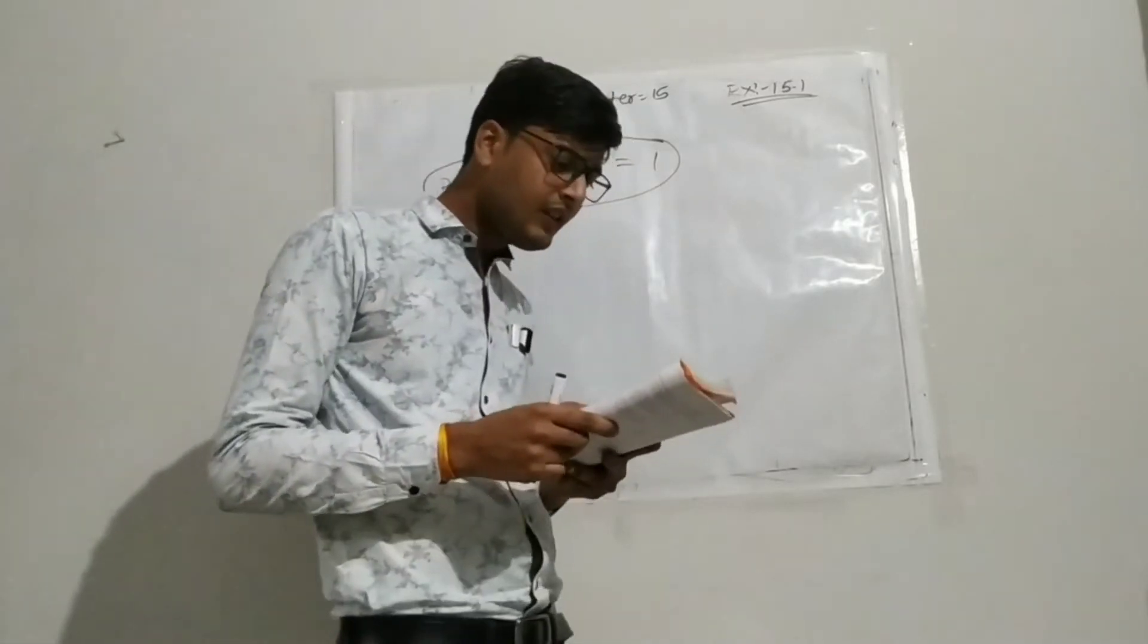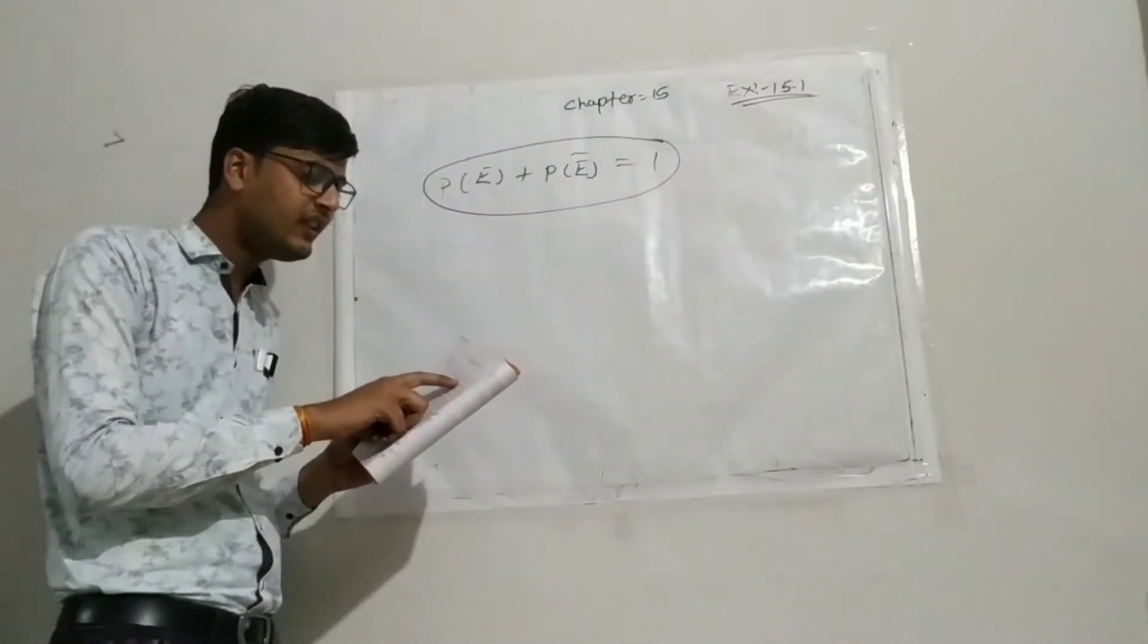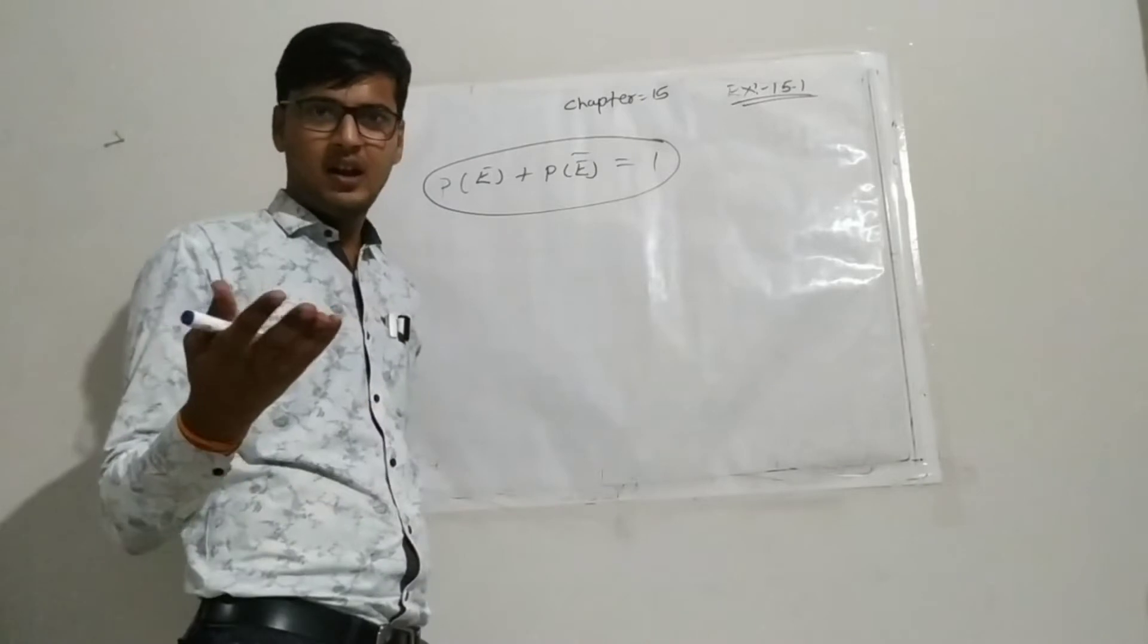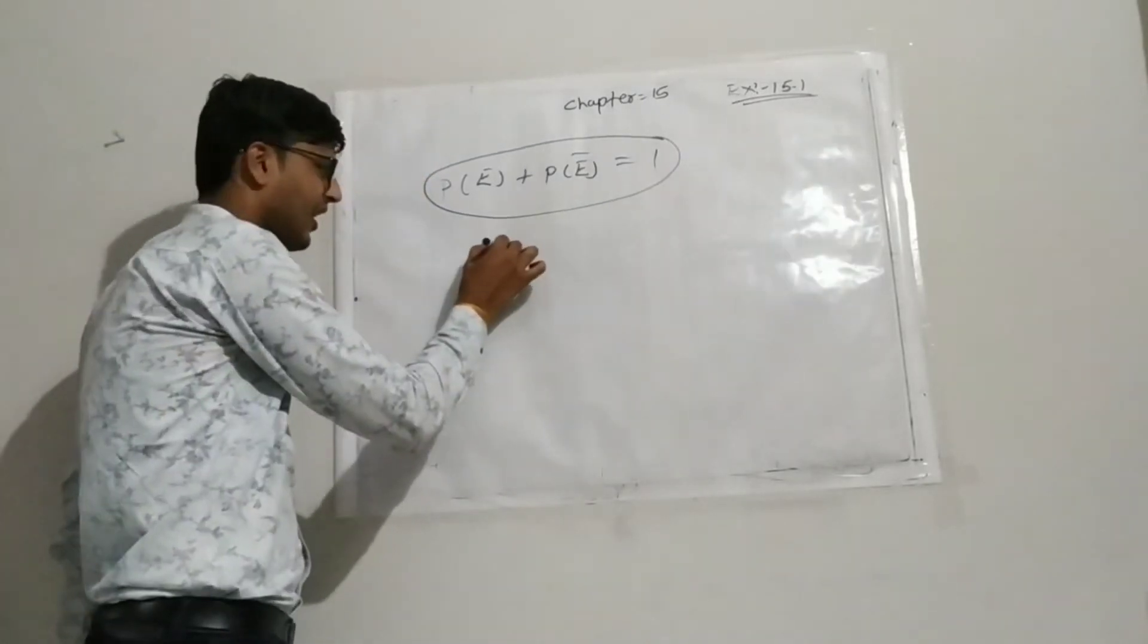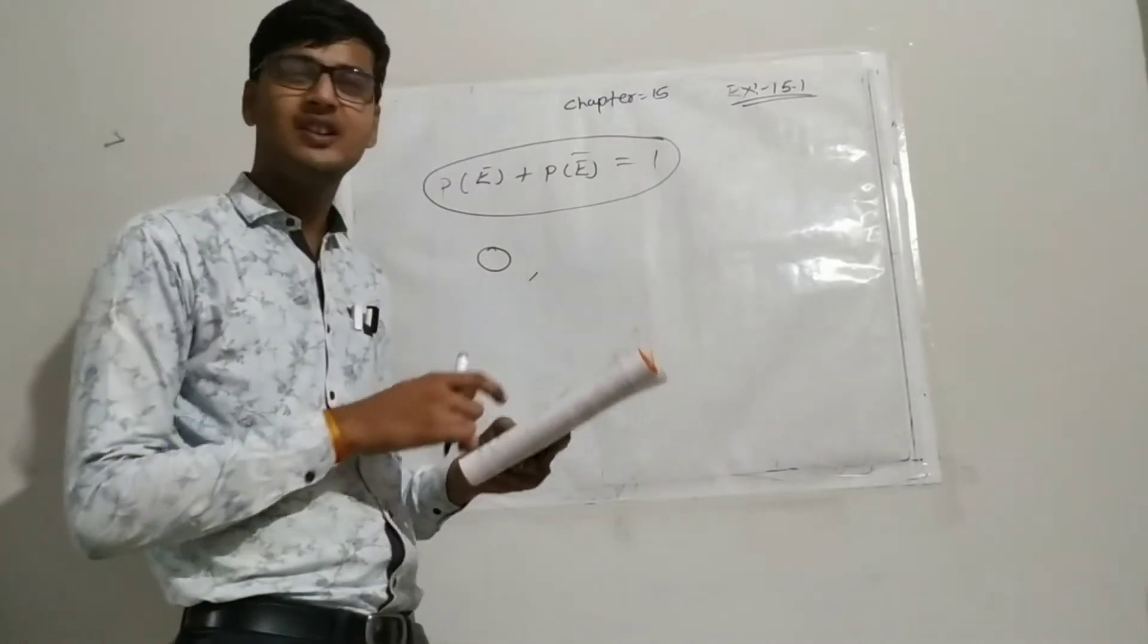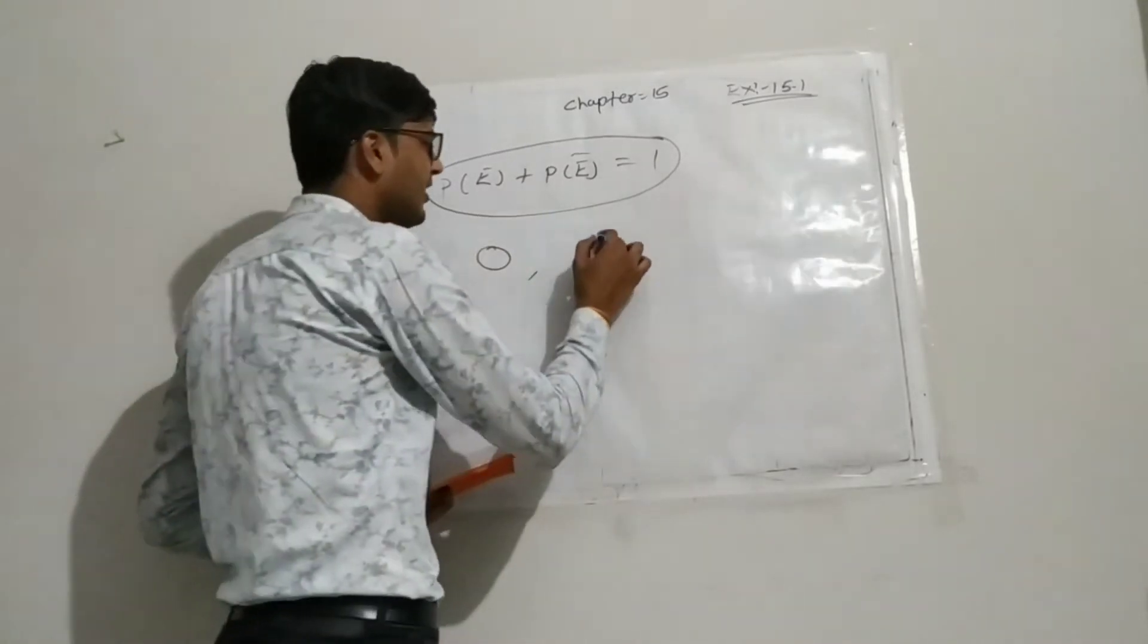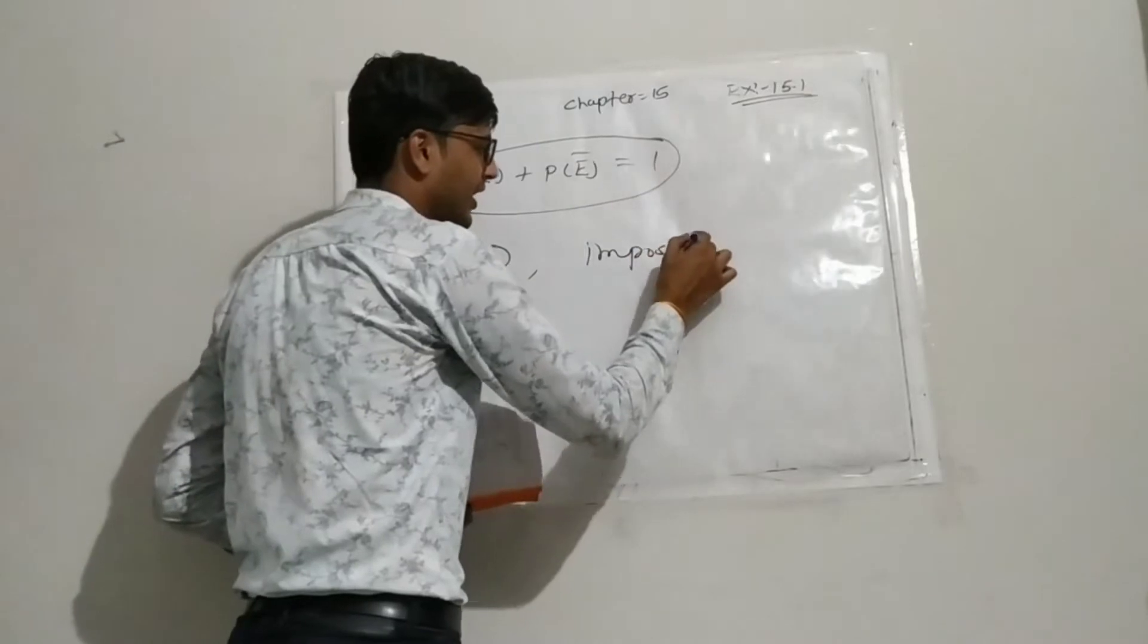Now second. The probability of an event that cannot happen. An event which cannot happen, its probability is 0. And such type of event is called an impossible event.